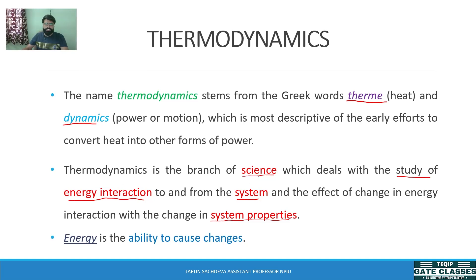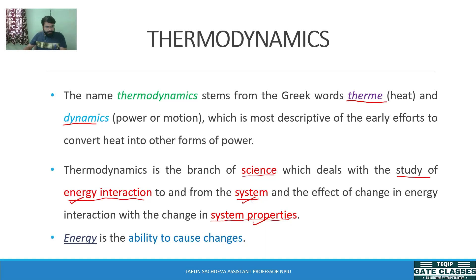To further understand thermodynamics and its definition, we need to understand the keywords within it. One keyword is energy, and another is system and its properties. We will understand each of these words one by one — what is the meaning and understanding of these words? First of all, we will take energy.